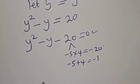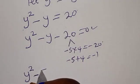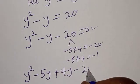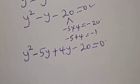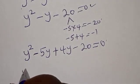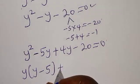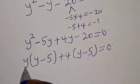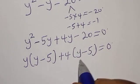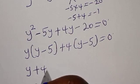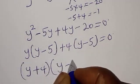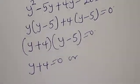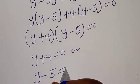We have minus 5 multiplied by 4 equals minus 20, and minus 5 plus 4 equals minus 1. So: y squared minus 5y plus 4y minus 20 equals 0, which gives y(y minus 5) plus 4(y minus 5) equals 0, therefore (y plus 4)(y minus 5) equals 0.